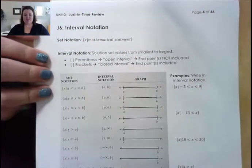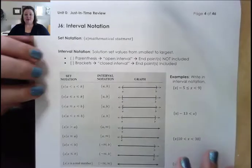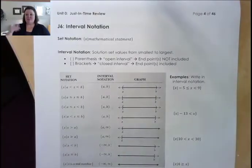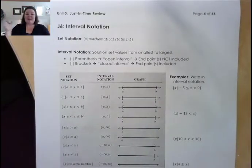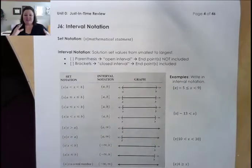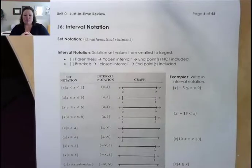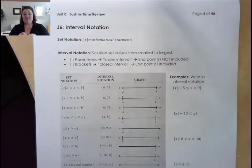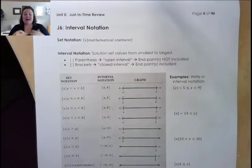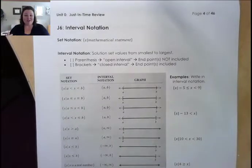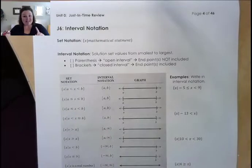Interval notation is basically saying my answers can be from this value to this value, or anything in between. Set notation is a more mathematically precise way of defining a set of solutions. We're going to go over both and how they're related so that you'll be able to navigate easily between one form and the other.